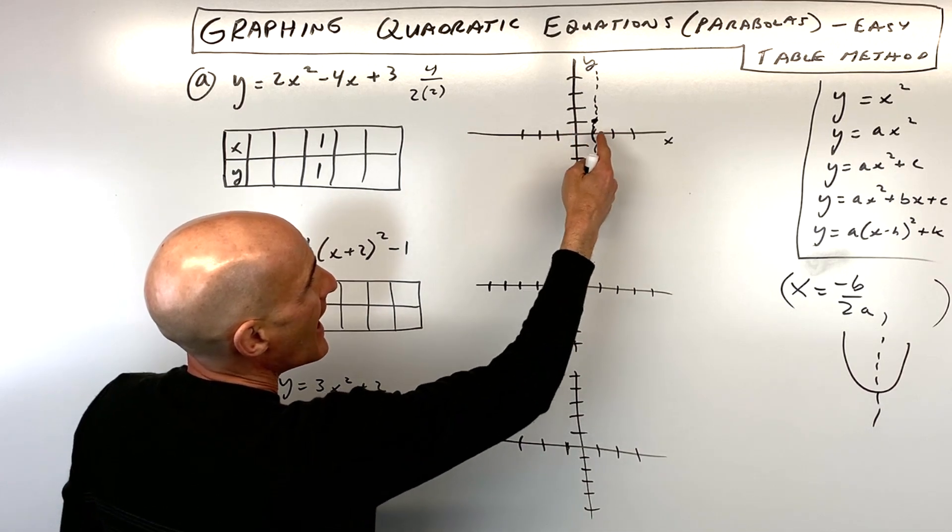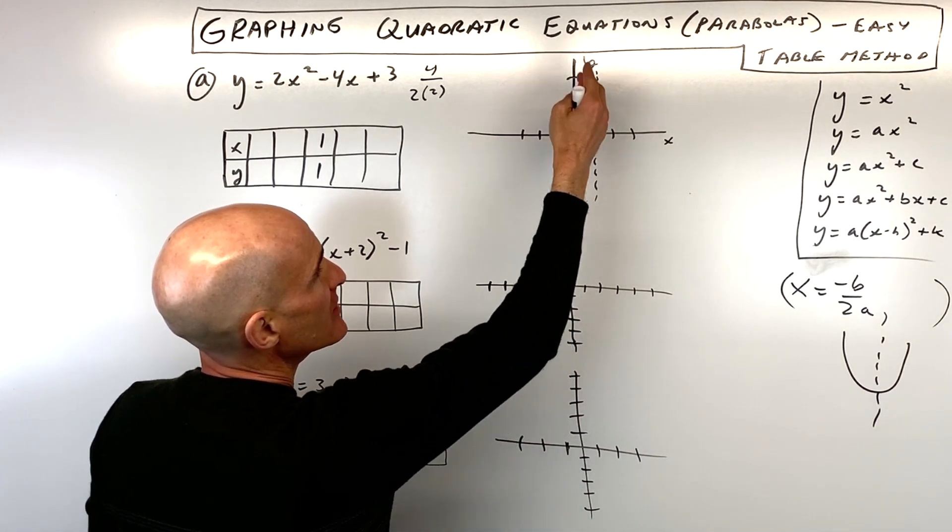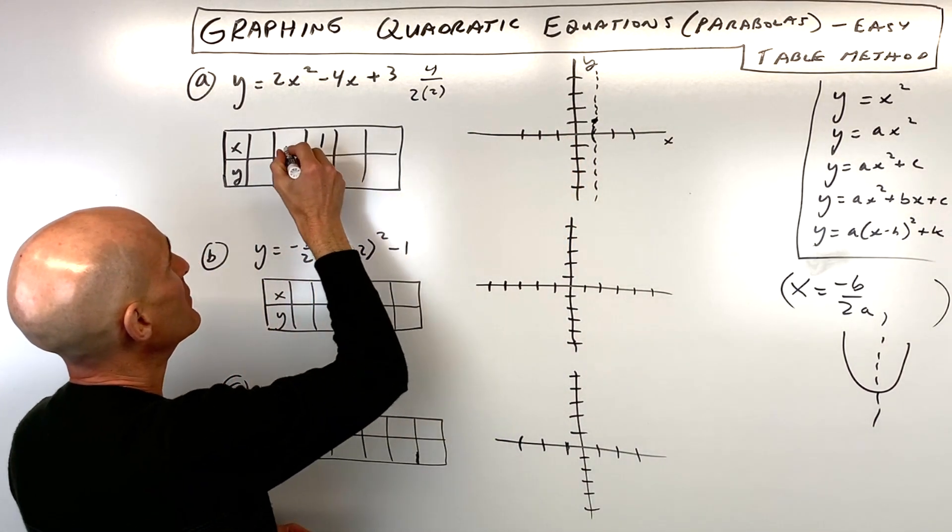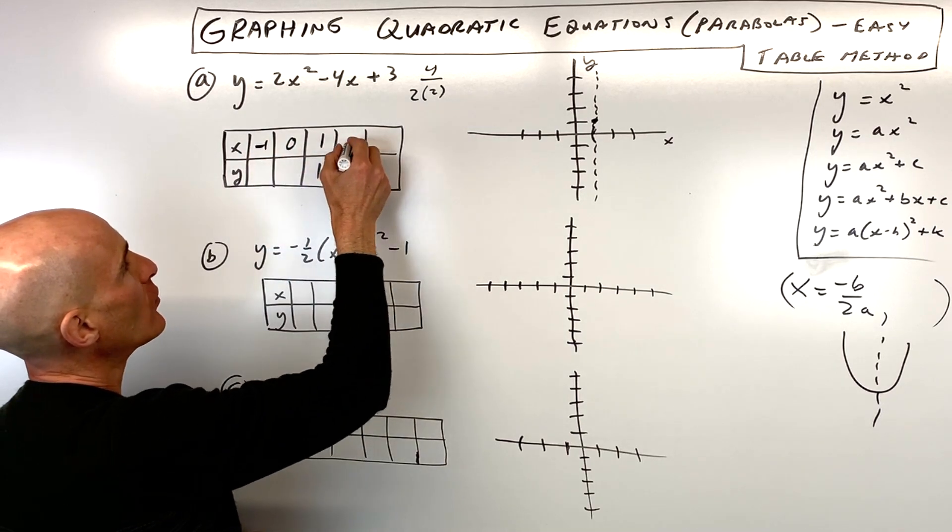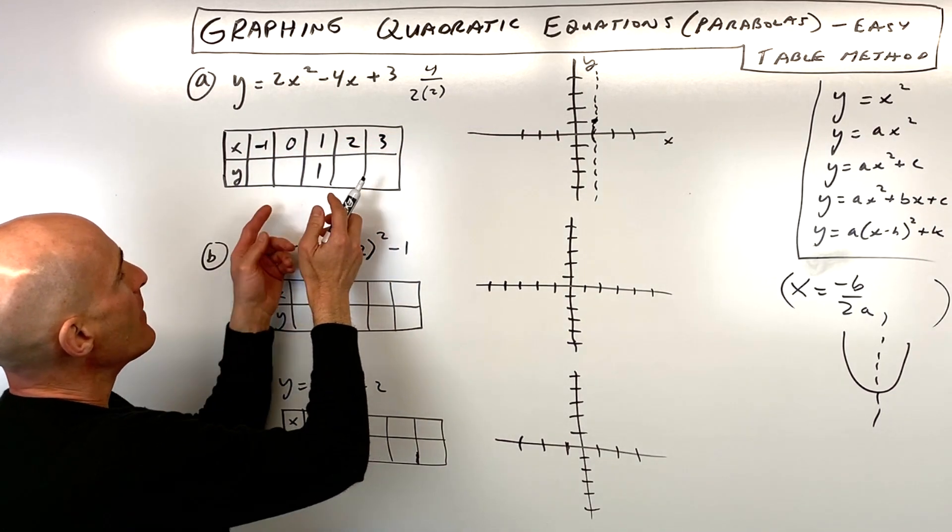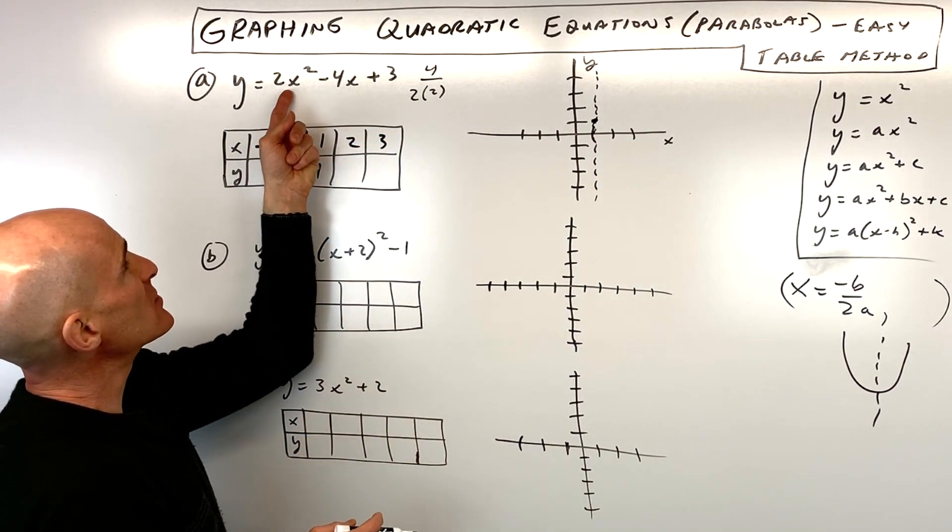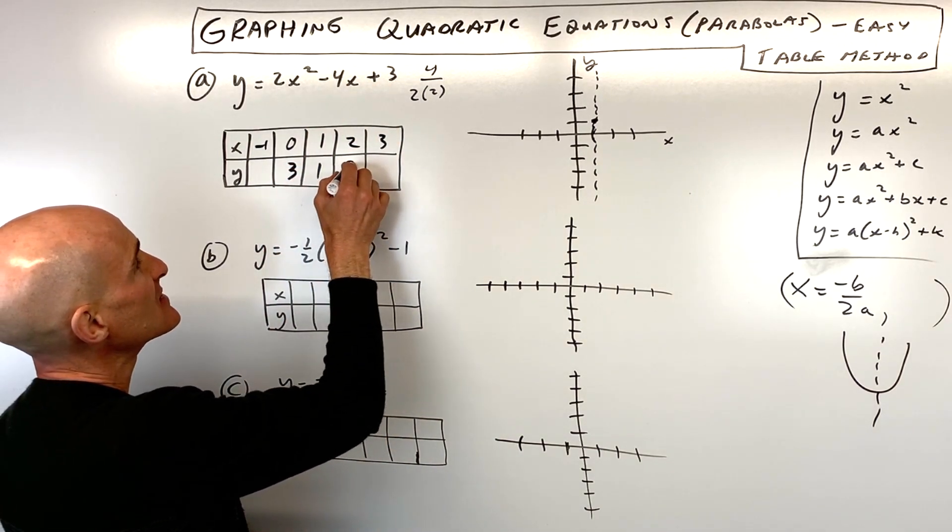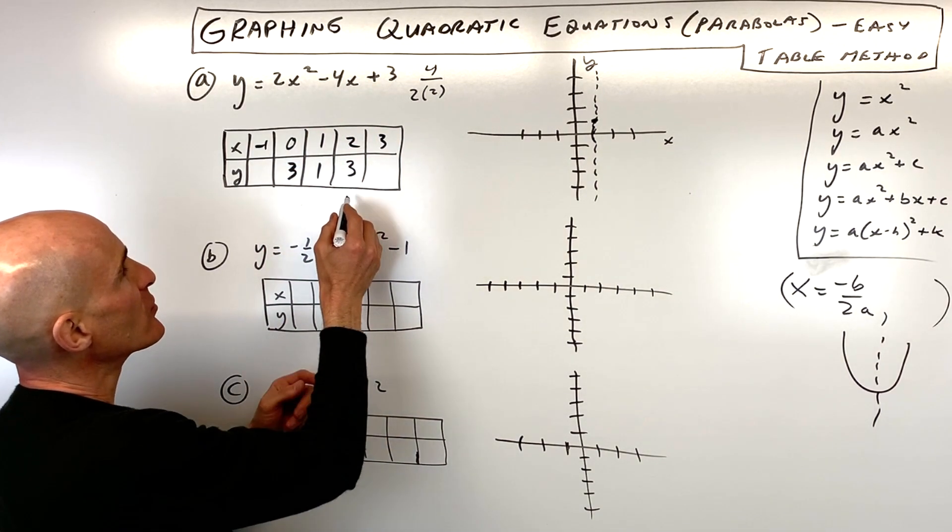Now what I'm going to do is I'm going to pick points on either side of this axis of symmetry. So for example, I could pick 0 and negative 1, or I could pick 2 and 3. So let's go ahead and put 0 in. If we put 0 in, we get 3, and it's going to be the same thing on the other side. So I know this is also 3.